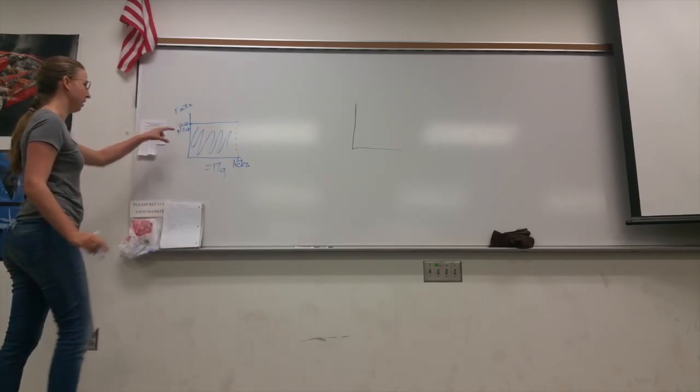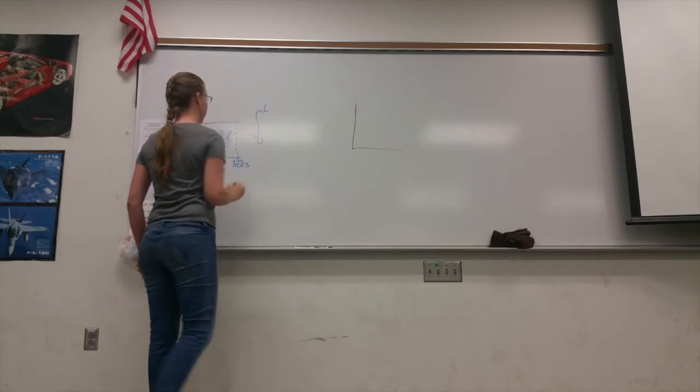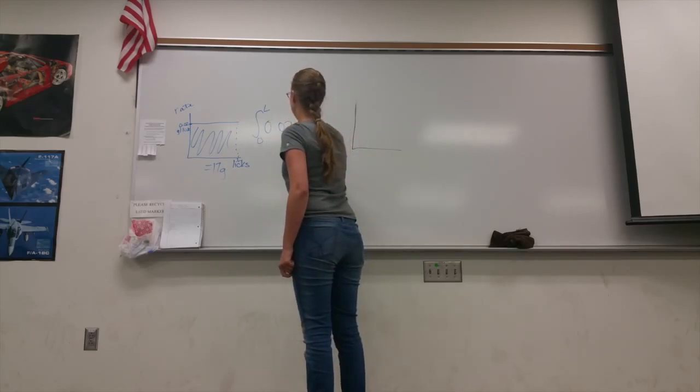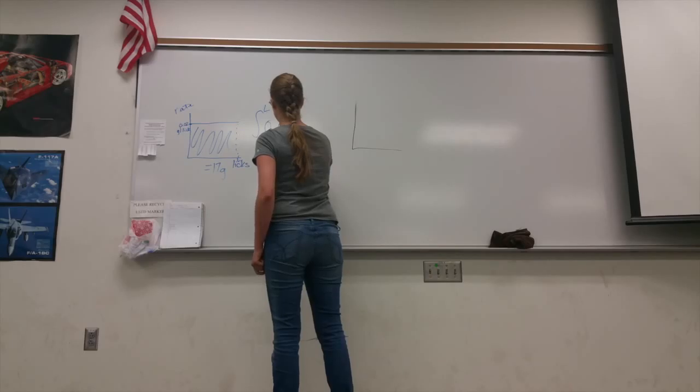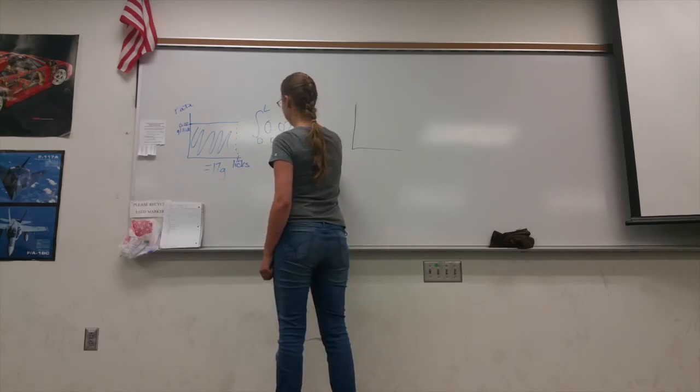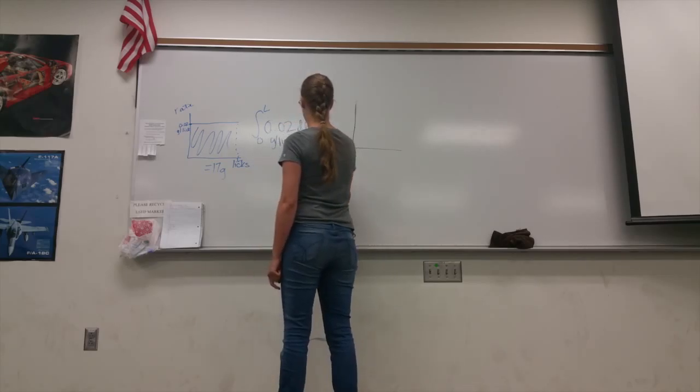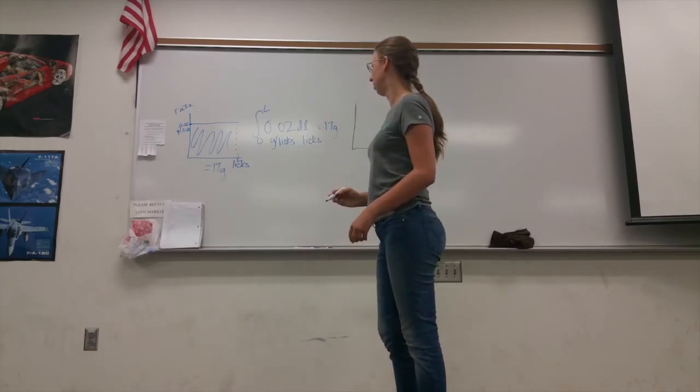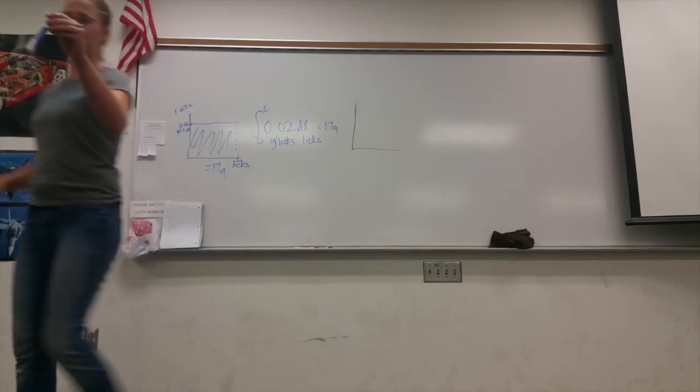So since we know we're summing that up, it would be from 0 to some amount of licks at our rate, which is 0.02. If we check our units, it's grams per lick times dl, which would be licks. That would be equal to 17 grams. So that's our first integral.